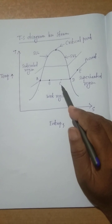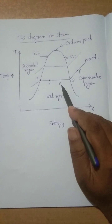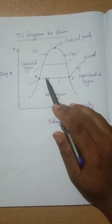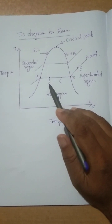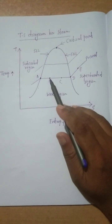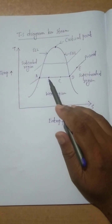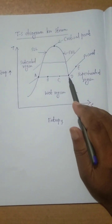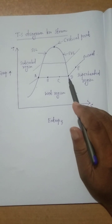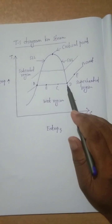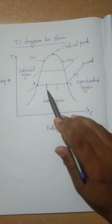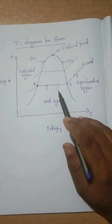Steam has three types: wet steam, dry saturated steam, and superheated steam. Wet steam means some mass is in liquid form and some mass is in vapor form — out of the total mass, some part is liquid and some part is vapor. When the total mass is converted into vapor, we call it dry saturated steam.